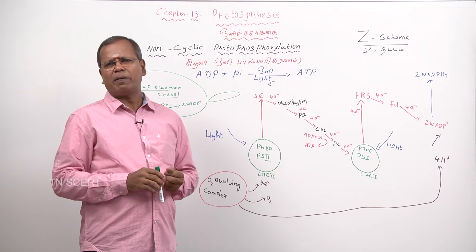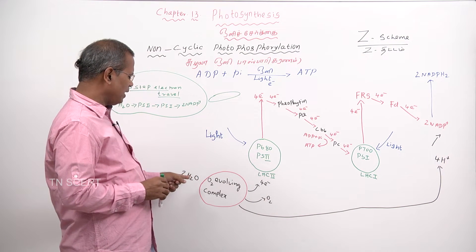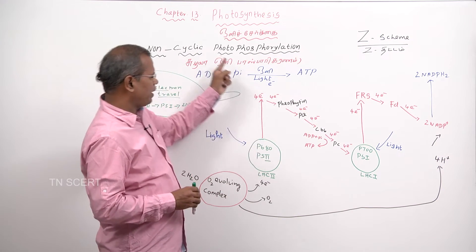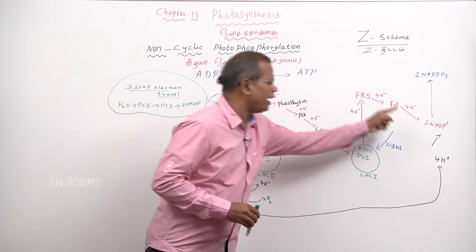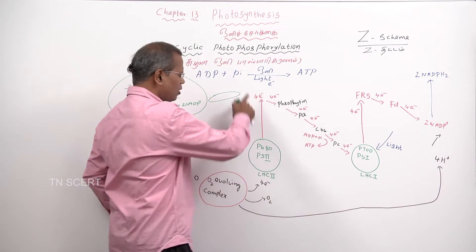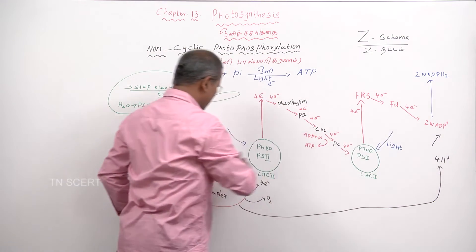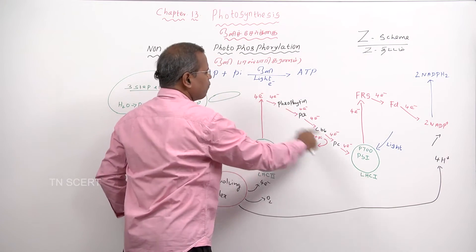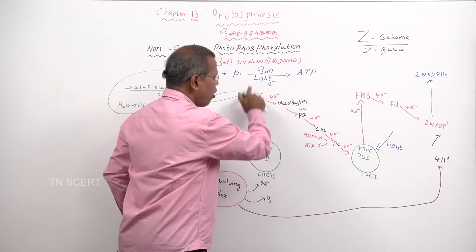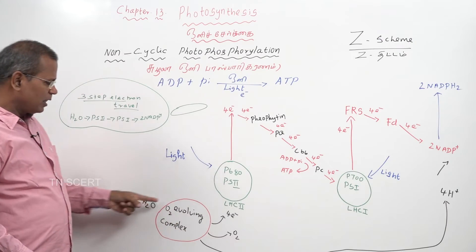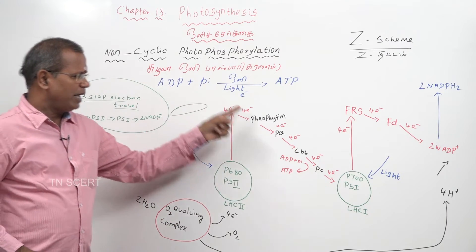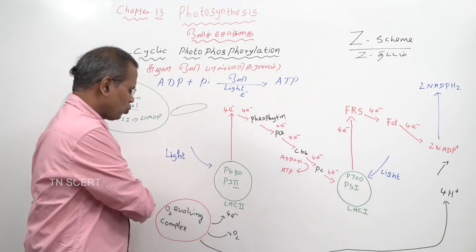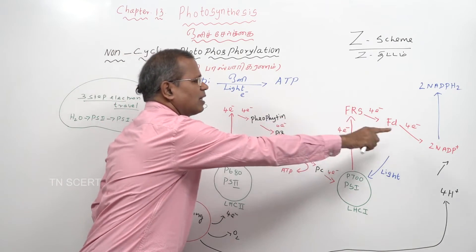Why is it called non-cyclic? In this process, the electron flows in one direction — from water to PS2 to PS1 to NADP+. The flow of electrons from water to NADP+ is called non-cyclic electron transport in photosynthesis.